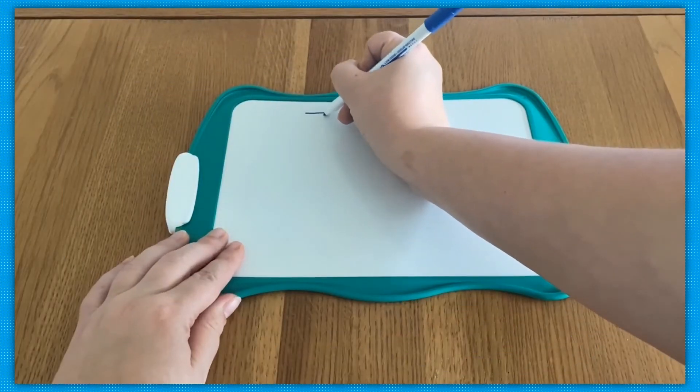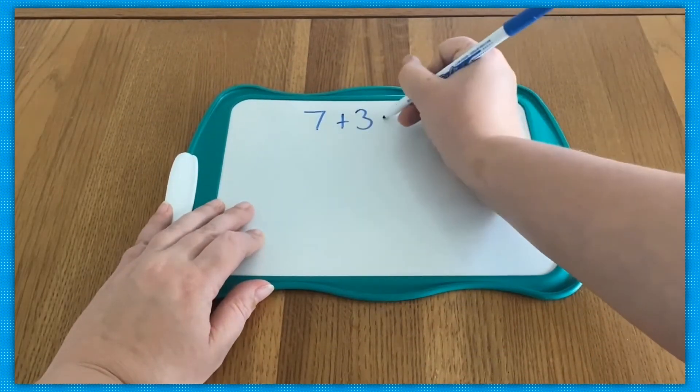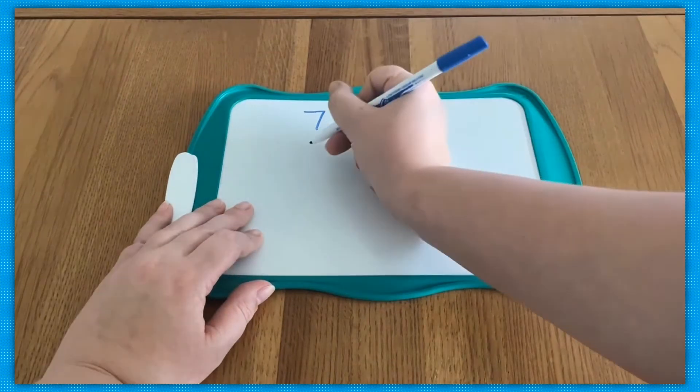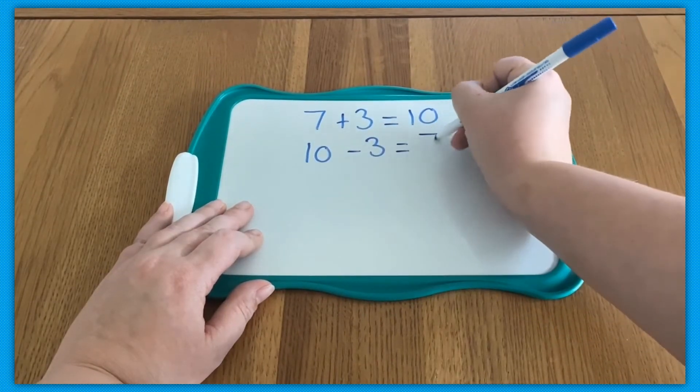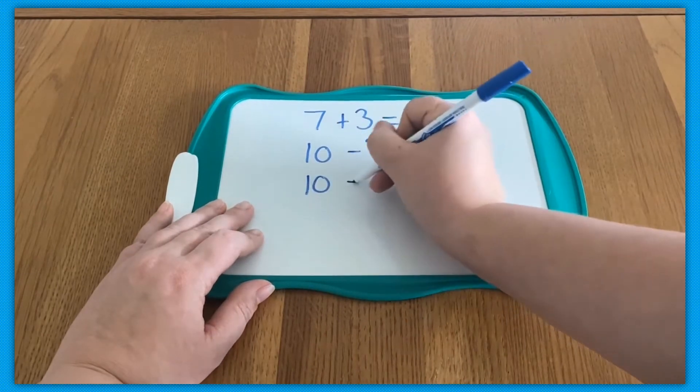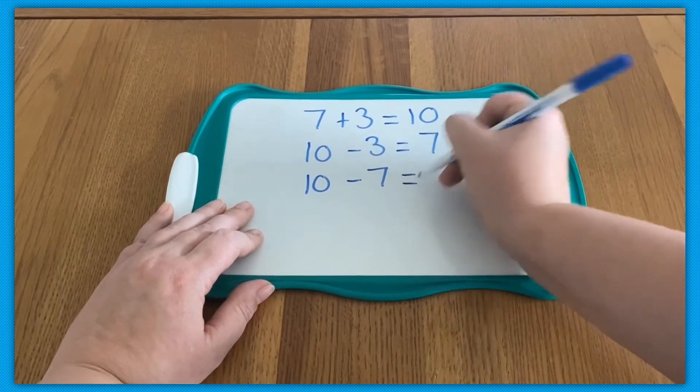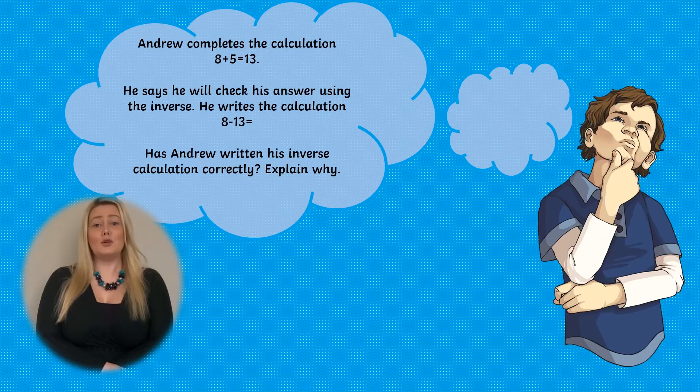For example, 7 add 3 equals 10 could be checked using 10 subtract 3 or 10 subtract 7. Ask learners to go back to the sheet and see if they can check another way.